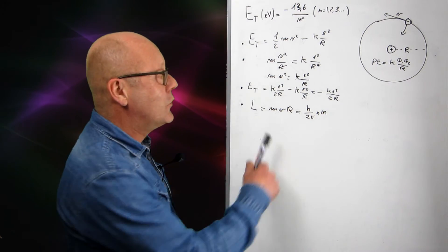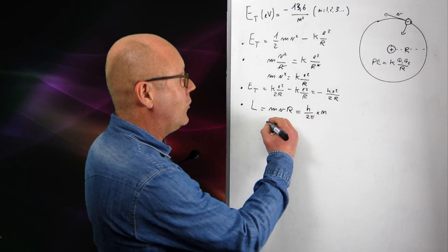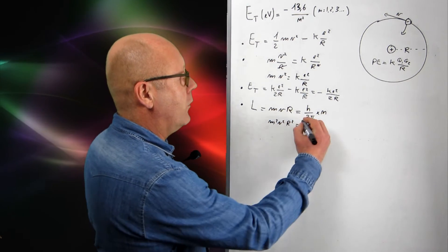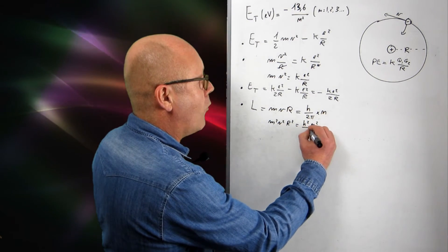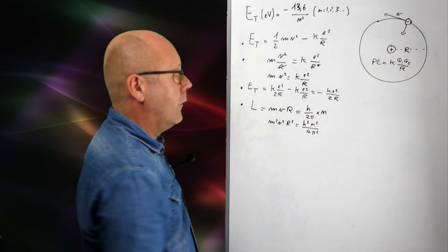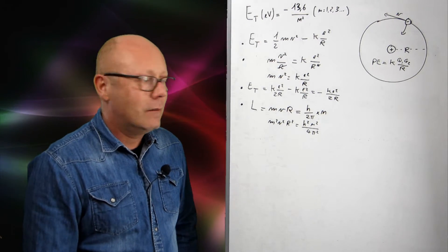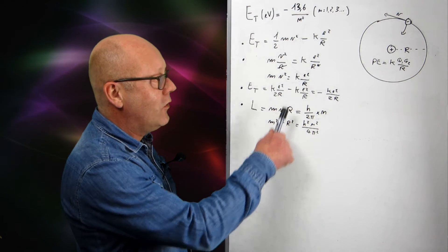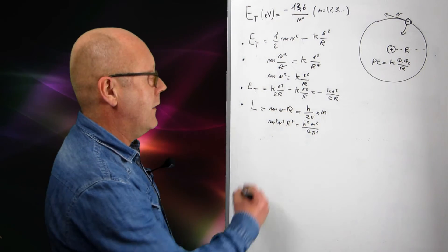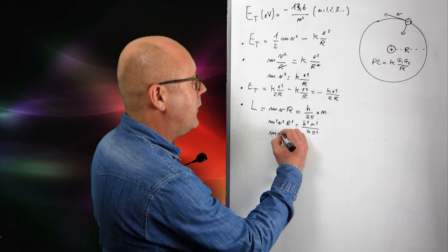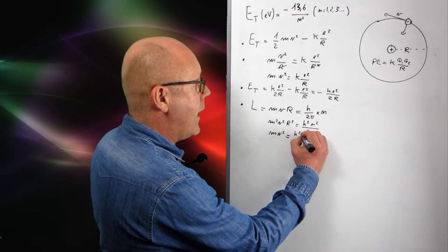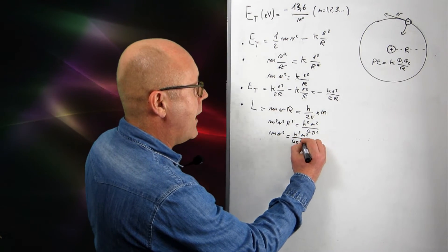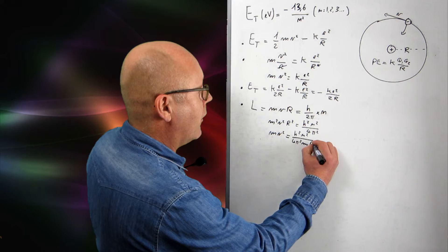Now, what's fun to do is to square this thing. So I'm going to square it. m-squared v-squared r-squared equals h-squared n-squared on 4pi-squared. Why do I do that? Well, because I want to get mv-squared, an expression for mv-squared, which can equate to that. Let's do that.